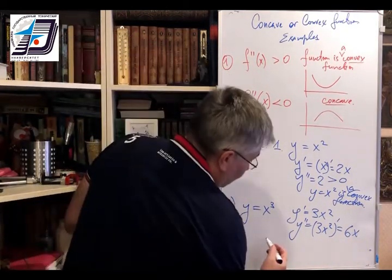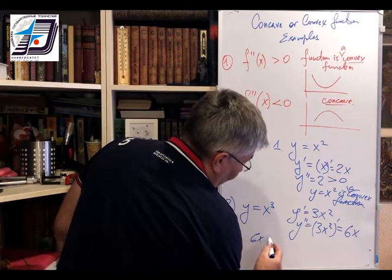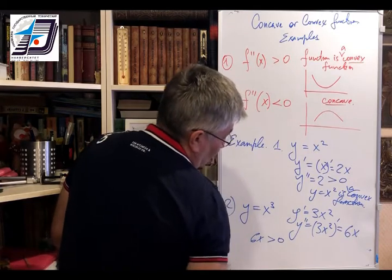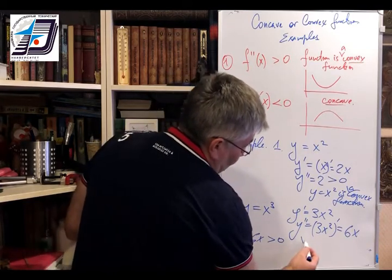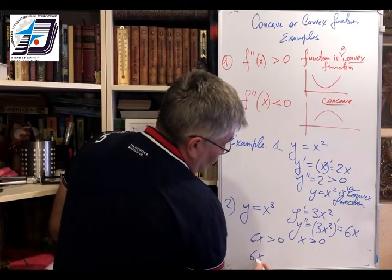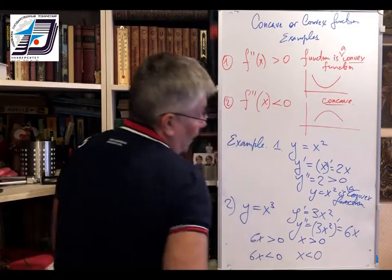You can notice that if 6x is more than 0, so it's x more than 0. Since that 6x is less than 0 where x is negative.